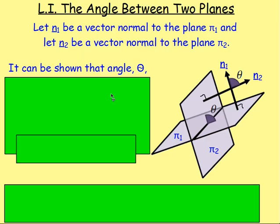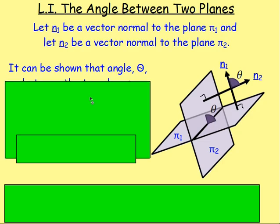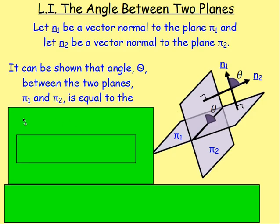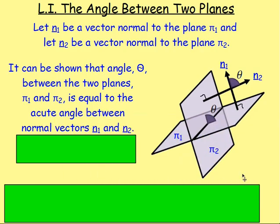It can be shown that the size of the angle here, θ, between the two planes π₁ and π₂, is equal to the acute angle between the normal vectors n₁ and n₂. So you can see here the size of this angle θ, it's going to be equal to the size of the acute angle between the two planes.